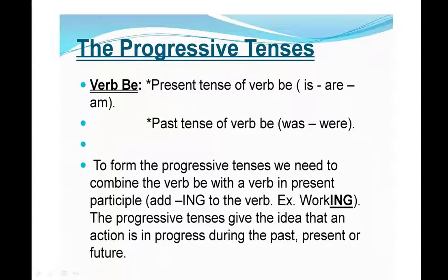For example, we can see the word here: 'working' — that means we have added the -ing. In this, we can see the Progressive in all the three tenses. In the present tense, we can use is, are, am, and in the past tense, we can use was and were.